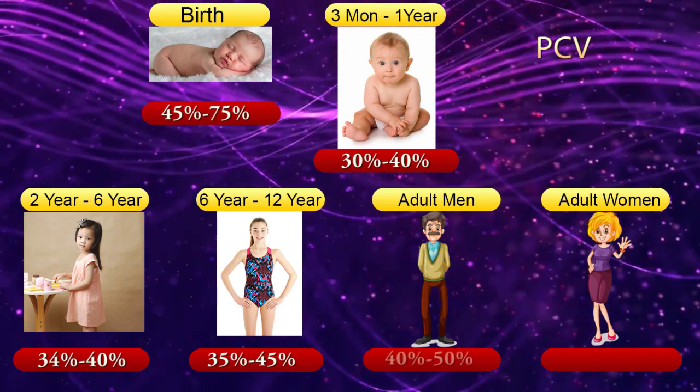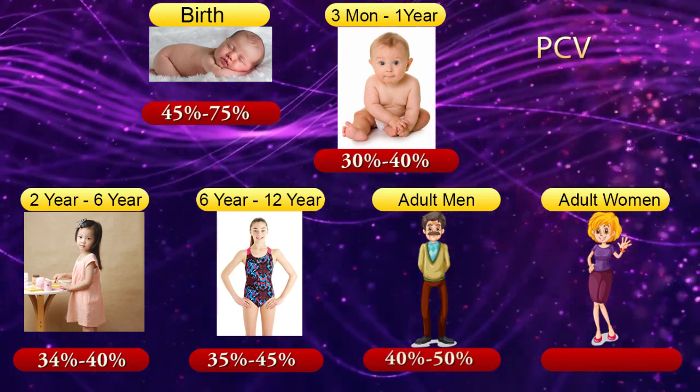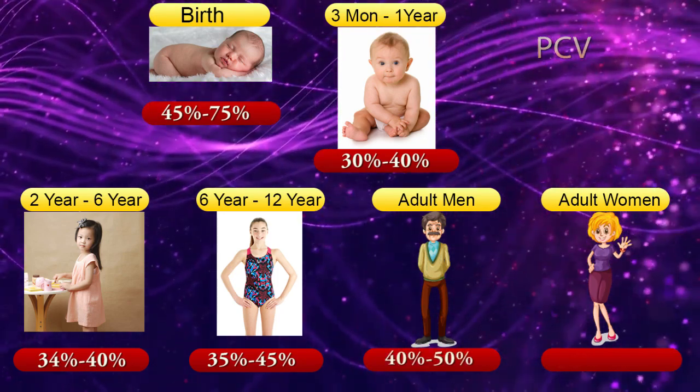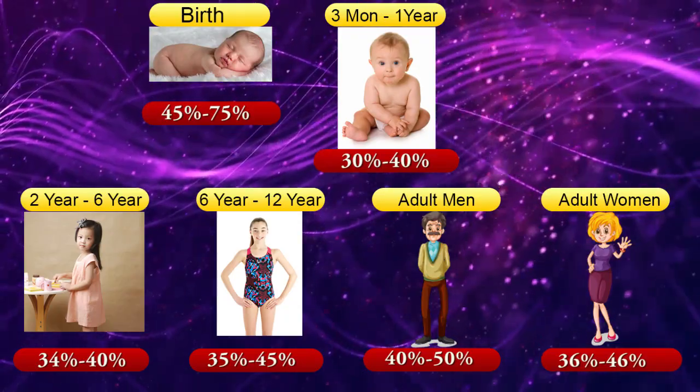Packed cell volume for adults. Adult men: 40–50%. Adult women: 36–46%.